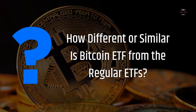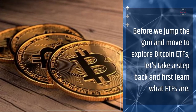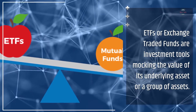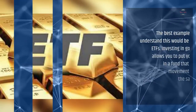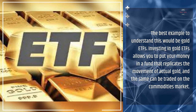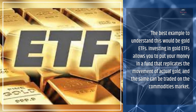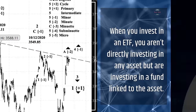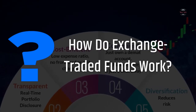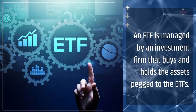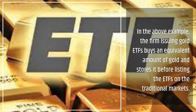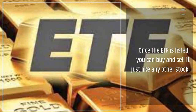How different or similar is a Bitcoin ETF from regular ETFs? First, let's learn what ETFs are. ETFs, or exchange traded funds, are investment tools that mimic the value of an underlying asset or a group of assets. The best example is gold ETFs — investing in gold ETFs allows you to put your money in a fund that replicates the movement of actual gold, and the same can be traded on the commodities market. When you invest in an ETF, you aren't directly investing in any asset but in a fund linked to the asset. An ETF is managed by an investment firm that buys and holds the assets pegged to the ETF. The firm issuing gold ETFs buys an equivalent amount of gold and stores it before listing the ETFs on traditional markets. Once the ETF is listed, you can buy and sell it just like any other stock.